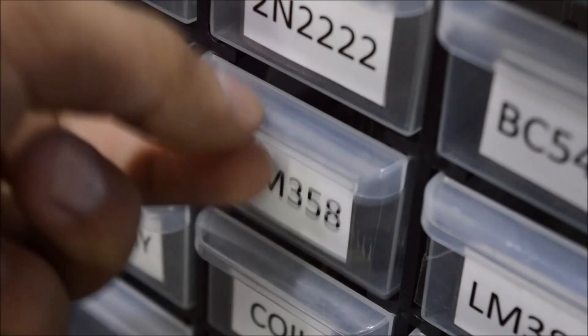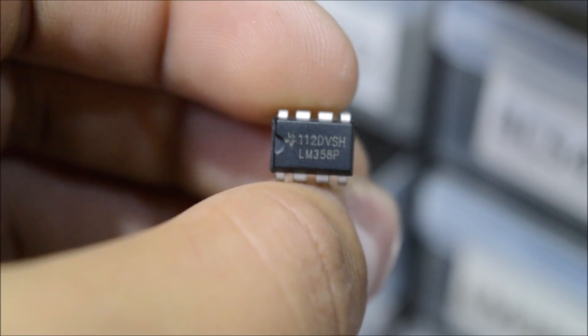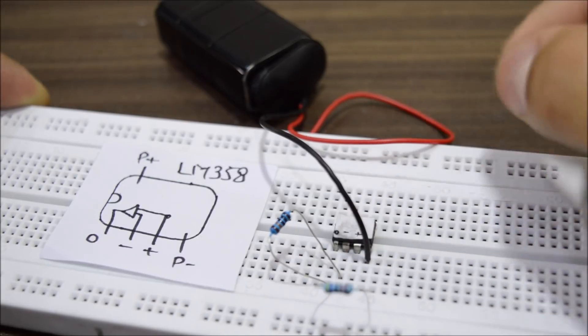So to give you a practical example, I will use my favorite LM358 op-amp, which is a dual op-amp IC, meaning it contains two op-amps inside. Now to give power to this IC, I am using this 9V battery.